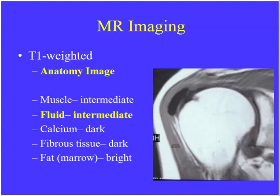We're going to start with the basics of MRI. In musculoskeletal imaging, we basically deal with T1 and T2-weighted images, and as long as you can differentiate between the two, you'll be in good shape. T1-weighted images have a short TR and short TE — we call them our anatomy image. They have very high resolution. The main difference is that on T1, fluid is intermediate in signal intensity, similar to muscle, whereas on T2, you have bright fluid.